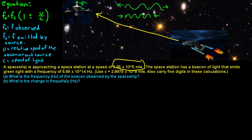So what is the frequency of the beacon observed by the spaceship? Well first off, what we need to do is determine what equation, and I already have it written up here. So you've got f_o equals f_s times 1 plus or minus u divided by c.